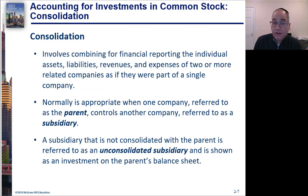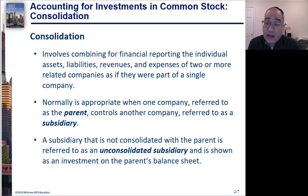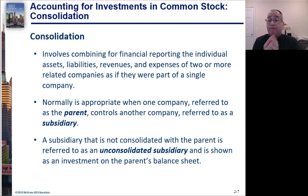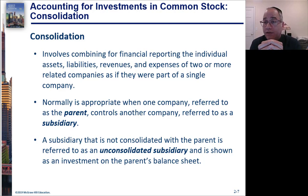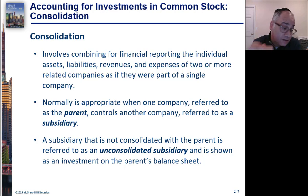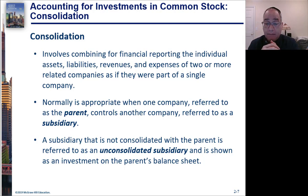If you have control — usually more than 50% — then you're going to consolidate. Consolidation involves taking the two companies and combining them as if they're one in the financial statements: a single balance sheet, single income statement, single statement of cash flows, and single statement of stockholders' equity, as if it were all one company. We refer to these as the parent and the subsidiary.